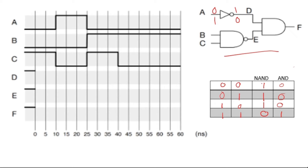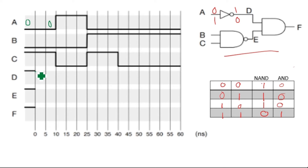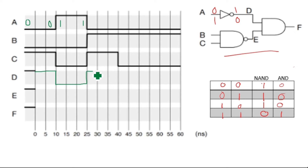Let's draw D first. D is connected to a NOT gate. If you apply zero it becomes one, and if you apply one it becomes zero. So initially A is zero, so D starts as one and remains one until the value where A becomes one — then D switches to zero. It remains zero until A goes back to zero, then D becomes one again for the rest of the duration.